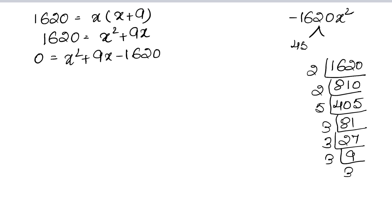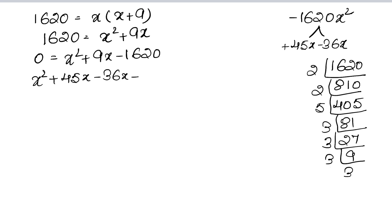Our factors are 45 and 36. The bigger one gets the plus sign and the smaller one gets the minus sign. So the equation becomes: x squared plus 45x minus 36x minus 1620 equals 0.